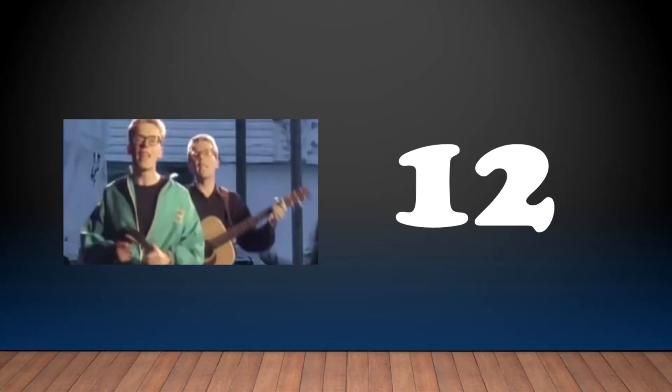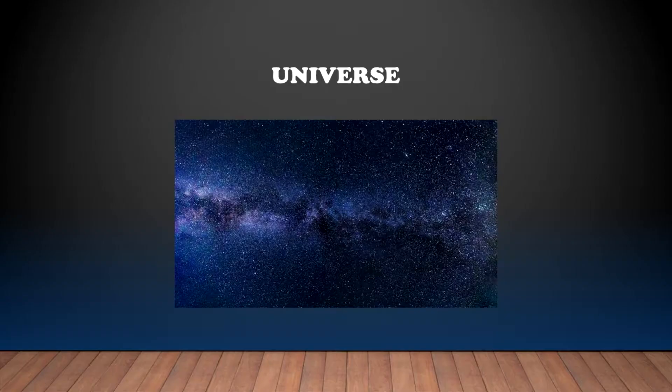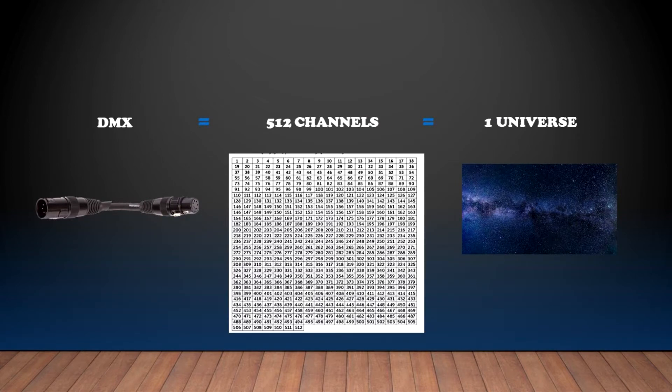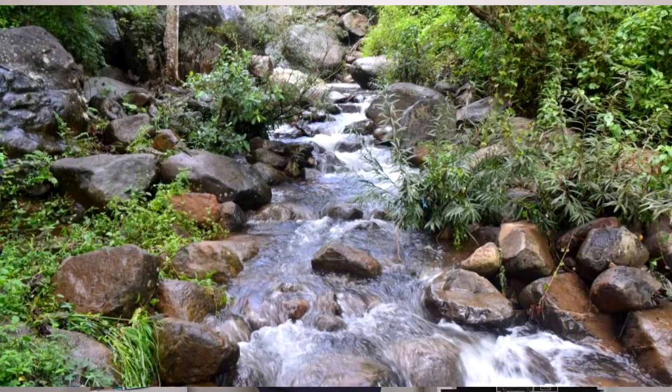And with that DMX protocol, we can carry 512 channels. And those 512 channels of DMX, we can then call it a universe. So universe 1 will consist of 512 channels, meaning that a second universe would need another DMX cable. In general, you can have up to 32 lights into one DMX stream.